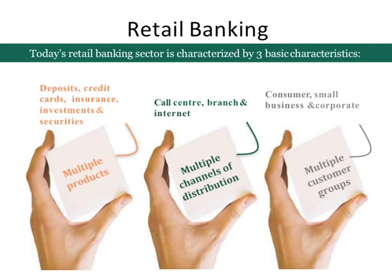Today's retail banking has three-tier characteristics. The retail banking structure is based on three-tier characteristics. The first tier covers products: deposits, credit cards, insurance, investments, and securities. These are the products of retail banks.